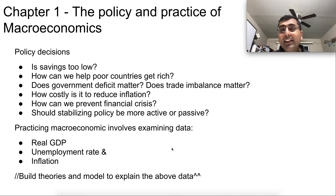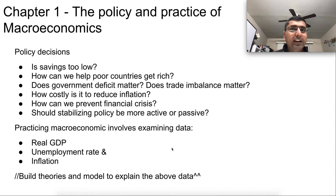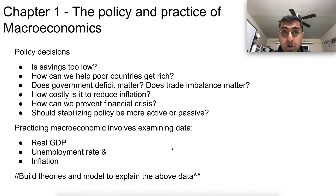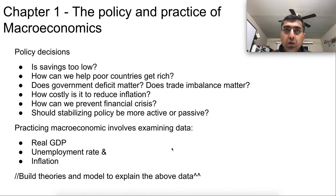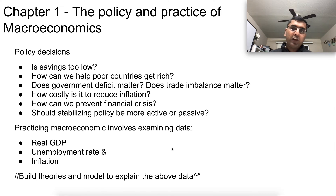Should the policies that countries adopt be more active or passive? Should they just let unemployment happen — which we saw in 2020 when unemployment went through the roof? What did governing bodies do to deal with that? These are decisions that a good understanding of macroeconomics helps us make in an educated way.